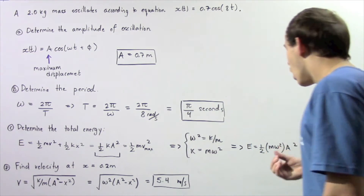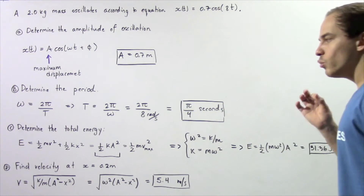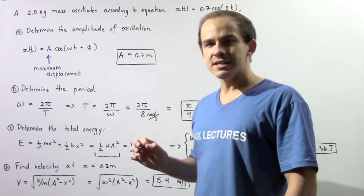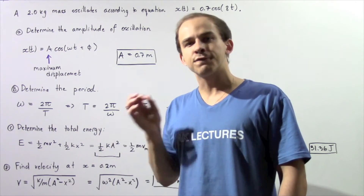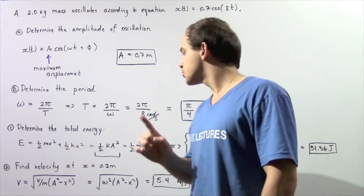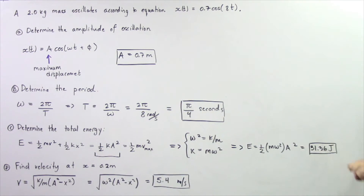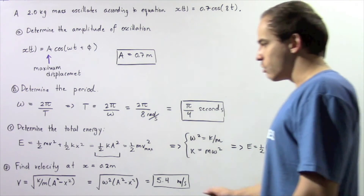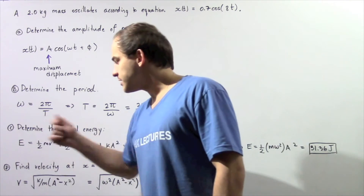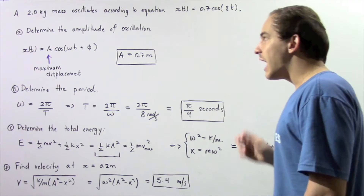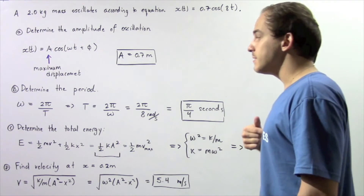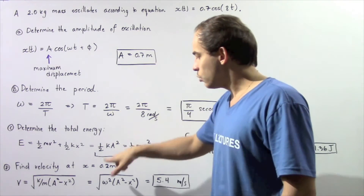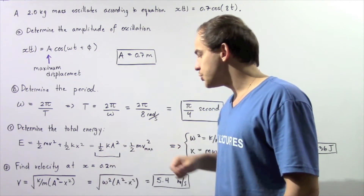Note that as long as there is no friction in our system and the object is moving along a horizontal frictionless surface, this energy quantity remains constant. Now let's move on to part D: find the velocity of our oscillating mass at x = 0.2 meters.